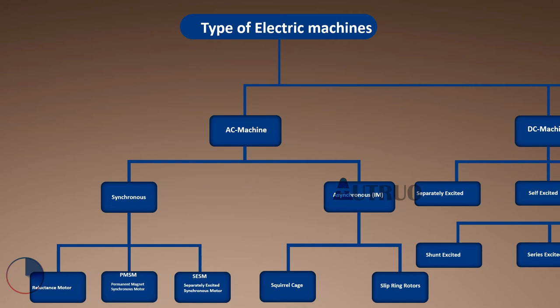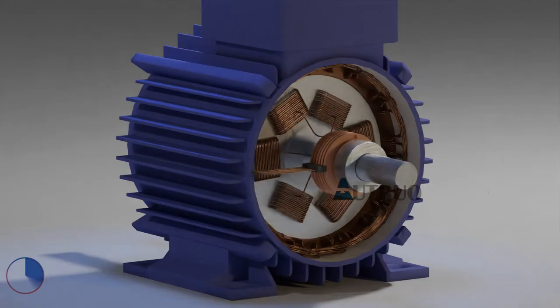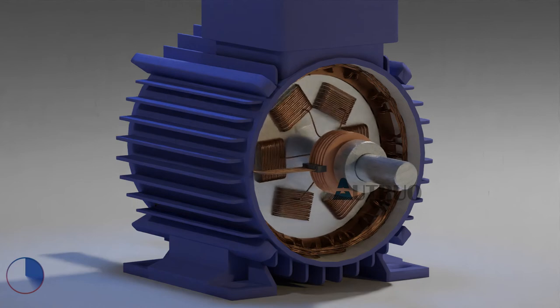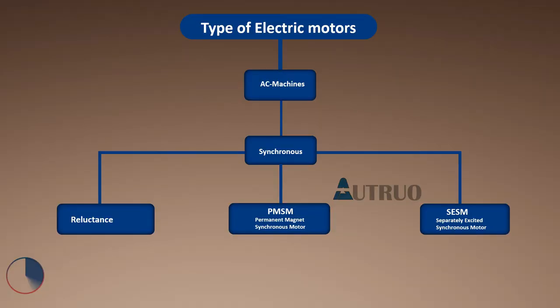AC machines are further divided into two, which are synchronous and asynchronous motors. Asynchronous motors can also be known as induction motors. Now let us look at the synchronous motor. In a synchronous motor, the rotor rotates at the same speed as the rotating field from the stator. This field is generated via the stator windings. In other words, the rotor rotates synchronously with the magnetic field of the stator. Synchronous motors can also be subdivided into three different types: reluctance motors, permanent magnet synchronous motors, and separately excited synchronous motors.